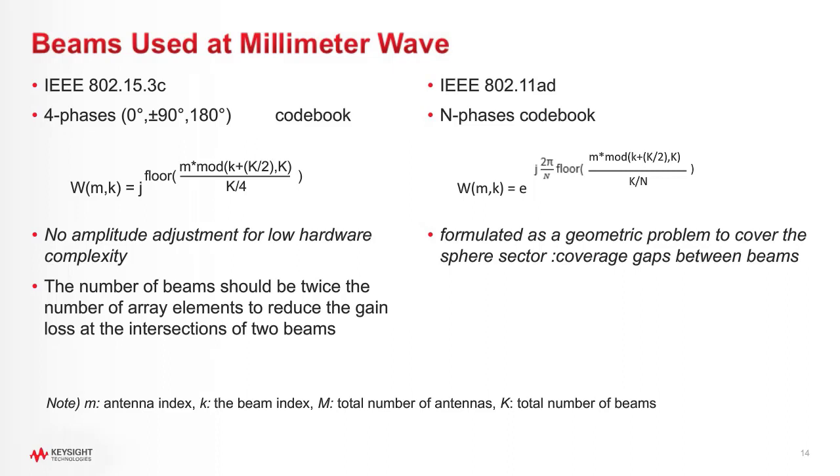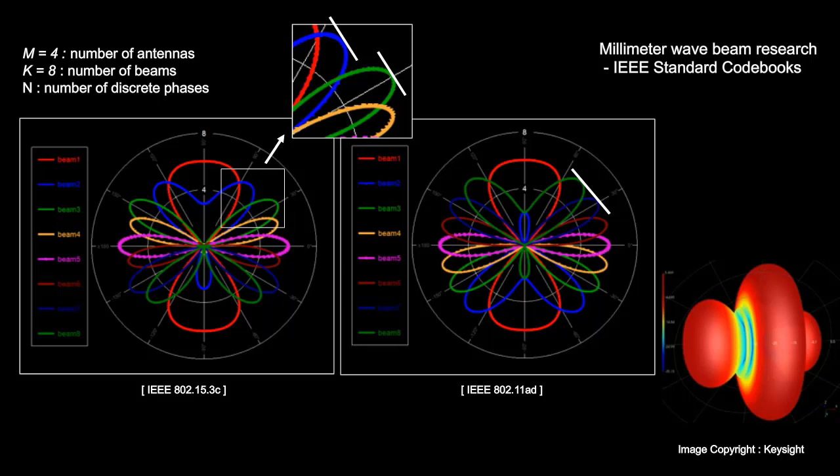An N-phase beam codebook for a phased array can be defined as M by K matrix W, where M denotes the number of antenna elements and K denotes the desired number of beams. In this page, I would like to illustrate these equations by showing you two different 5-cut beam patterns. When M equals 4, the 11AD codebook is just the same as the 15.3C. When K is greater than or equal to 2 times M, the gain loss of an intersection point between adjacent beams will be less than 1 dB.